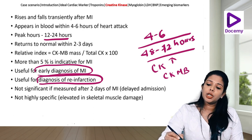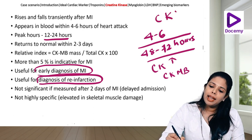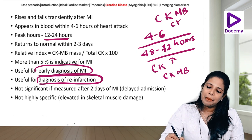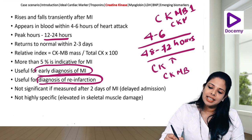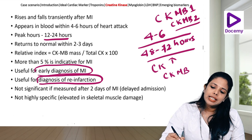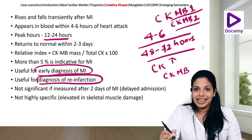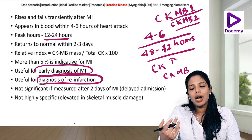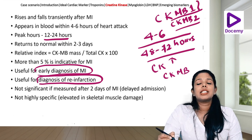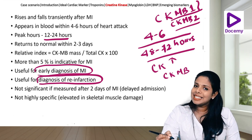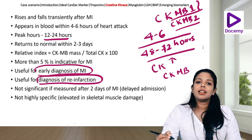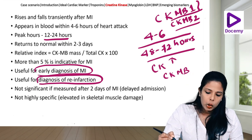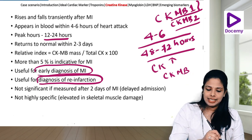CKMB has two isoforms: CKMB1 and CKMB2. CKMB2 is the one released from cardiac muscles. Normally in blood you have CKMB1, but whenever there is an acute MI, CKMB2 will be more predominant.